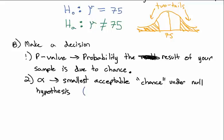We compare the p-value to alpha — the smallest acceptable chance under the null hypothesis. Alpha is usually 0.1, 0.05, or 0.01. Most often we choose 5%: if there is less than a 5% chance this would happen randomly, it's probably not random. If there's greater than a 5% chance, it might just have been a fluke.